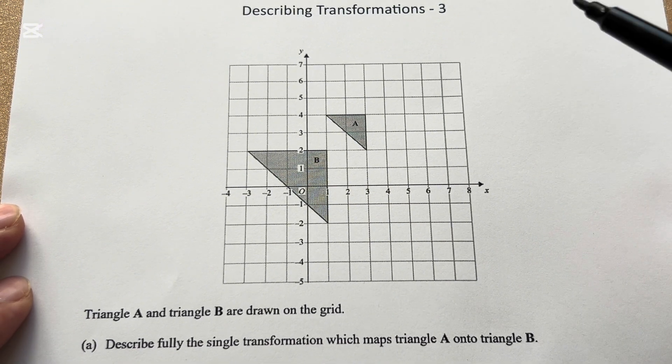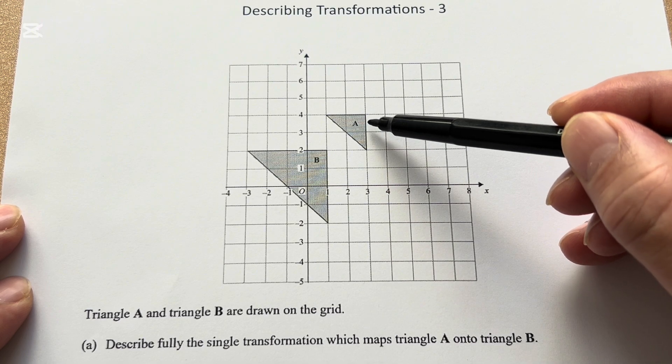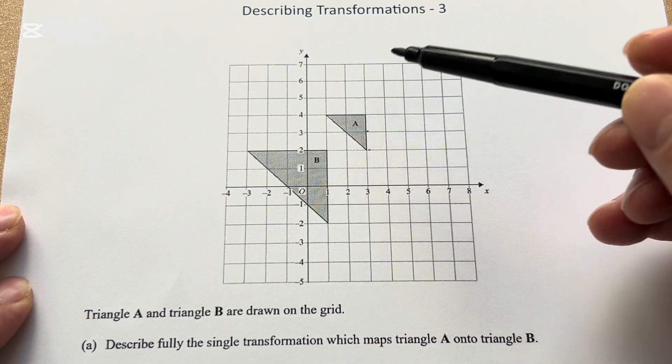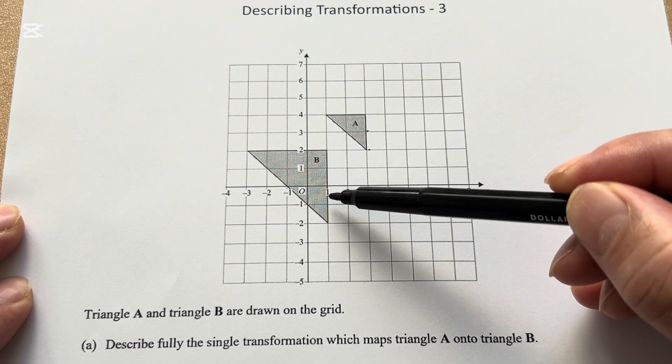To find the scale factor, you take one of the sides. This is two units, and then the corresponding side over here is four units.